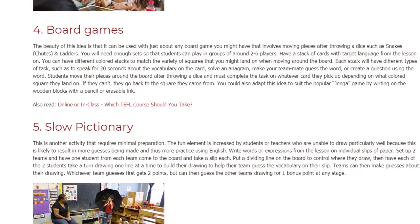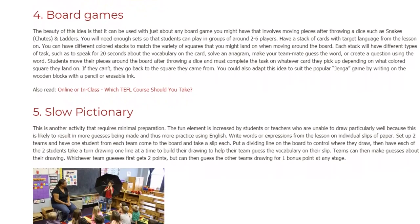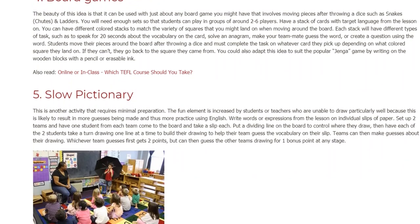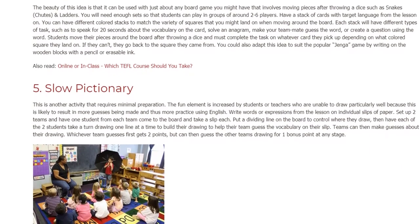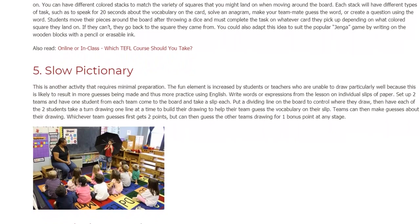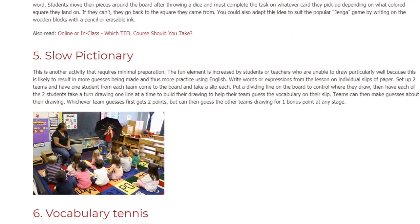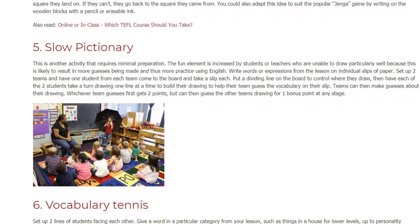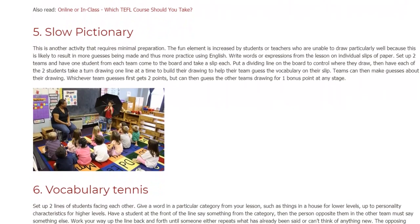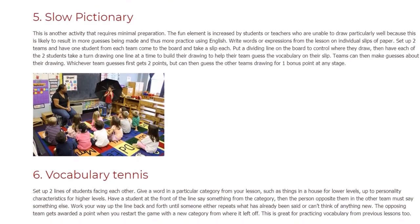5. Slow Pictionary. This is another activity that requires minimal preparation. The fun element is increased by students or teachers who are unable to draw particularly well, because this is likely to result in more guesses being made and thus more practice using English. Write words or expressions from the lesson on individual slips of paper. Set up two teams and have one student from each team come to the board and take a slip each. Put a dividing line on the board to control where they draw, then have each of the two students take a turn drawing one line at a time to build their drawing to help their team guess the vocabulary on their slip. Teams can then make guesses about their drawing. Whichever team guesses first gets two points, but can then guess the other team's drawing for one bonus point at any stage.